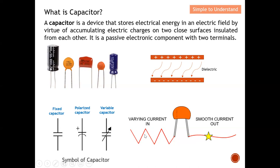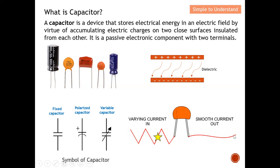After passing through the capacitor, we have almost a DC value of current, which means it is quite stable. This is what we want to achieve from a capacitor.